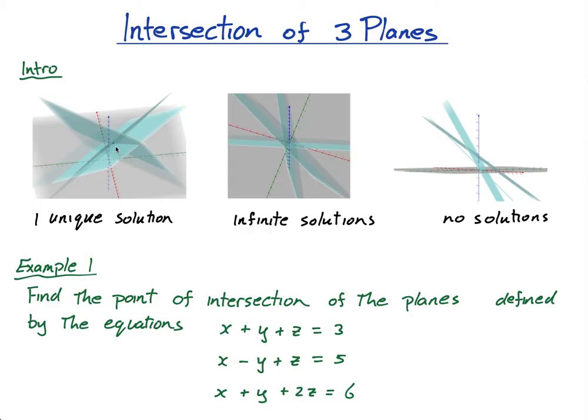This picture shows three planes intersecting at a point. This picture shows three planes intersecting at a line. And this is three planes that actually don't intersect at all.